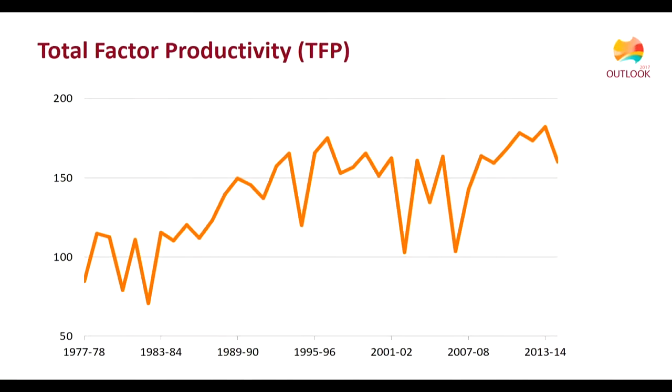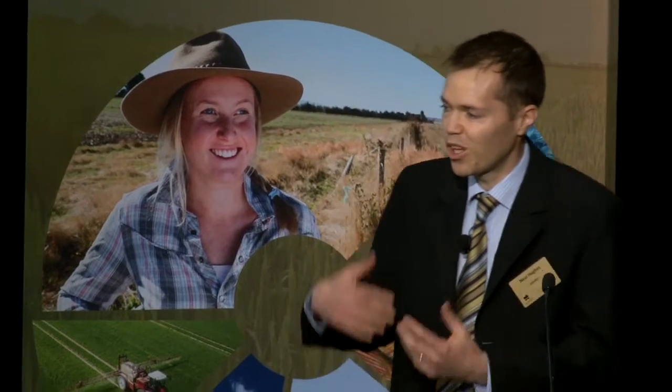When we talk about productivity at ABARES, we're generally talking about total factor productivity. TFP, like crop yield, is a measure of output relative to input, the difference being that it takes into account all of the farm outputs and all of the farm inputs. This chart shows average total factor productivity of cropping farms in Australia from an ABS farm survey, covering data from 1978 to 2015. These TFP numbers receive a lot of attention. Improving productivity is seen as key to maintaining the profitability of the industry in the long run, particularly in the face of increasing global competition. These numbers are used to assess whether we're improving farm technology over time, particularly whether investments that industry and government are making in research and development are generating a return.